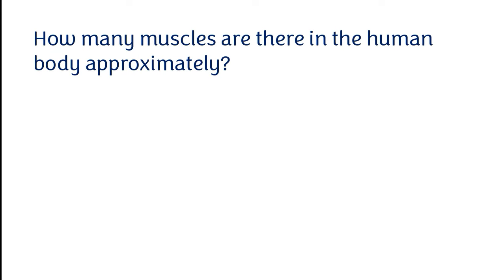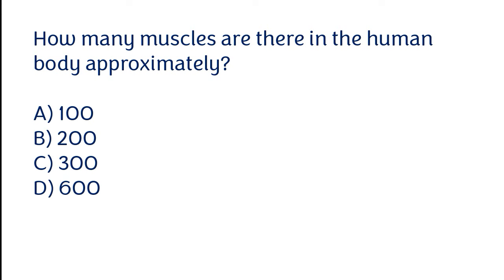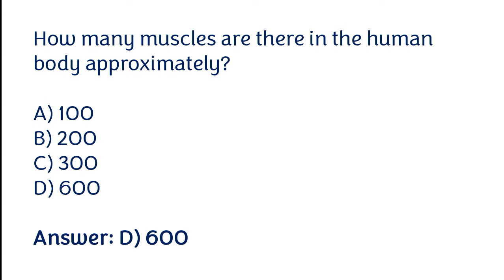How many muscles are there in the human body approximately? Options: 100, 200, 300, or 600. The correct answer is option D — there are approximately 600 muscles in the human body.